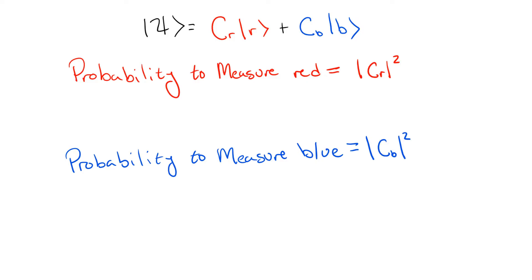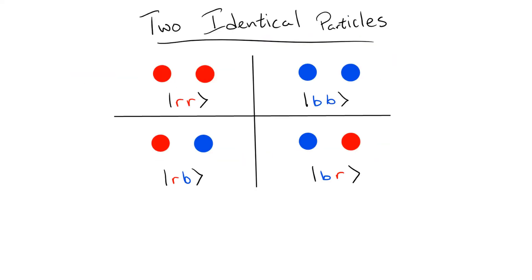Keeping this all in mind, we can now move on to thinking about a system of two identical particles. If each of these particles can again be measured to be either red or blue, we have four possibilities for the outcome of a color measurement: both red, both blue, particle 1 red particle 2 blue,